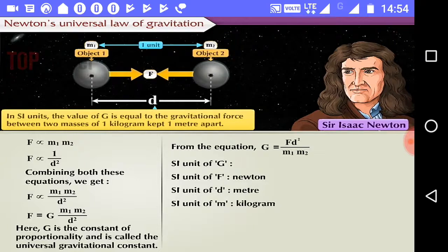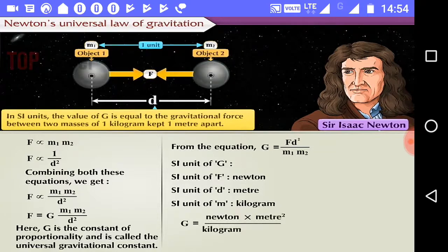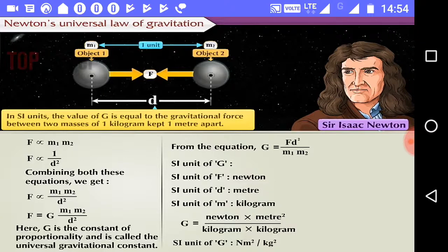Therefore, SI unit of G is equal to Newton into meter square upon kilogram into kilogram. Thus, SI unit of G is equal to Newton meter square per kilogram square.